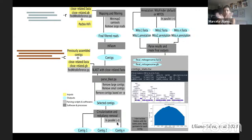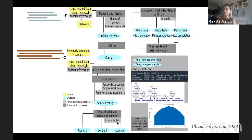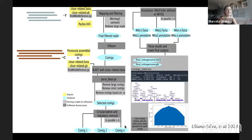After filtering, the remaining contigs are circularized: we try to find if the ends self-BLAST with each other, and you can change the parameters for how much of the self-BLAST overlap to use. When found, we cut the redundancy, then annotate the mitochondria. If it has all the genes, we rotate it to start at the tRNA-Phenylalanine by convention. Then you have a final FASTA sequence and final annotation. We'll do all of this together so don't worry if you don't understand everything right now.